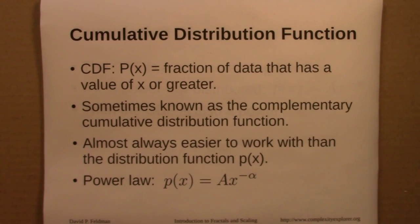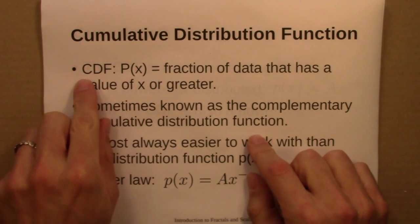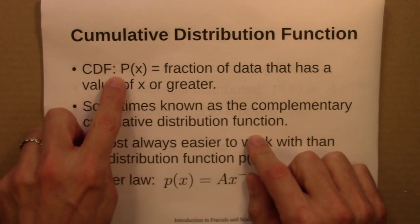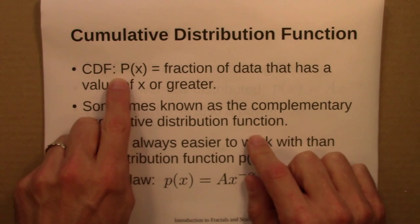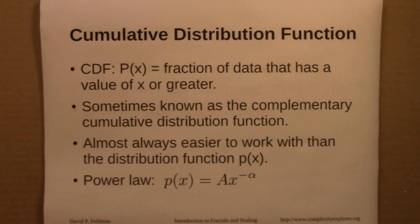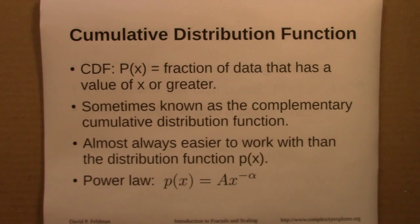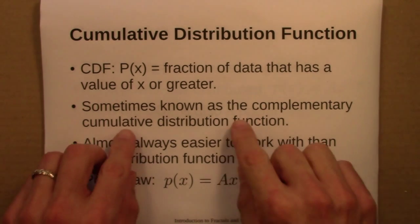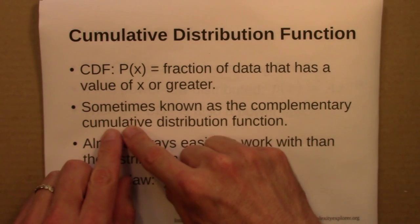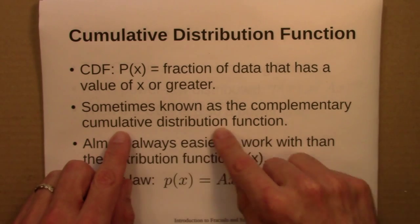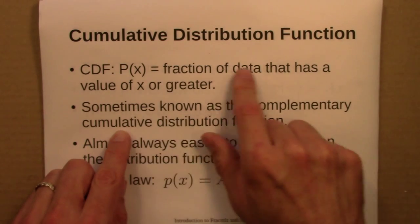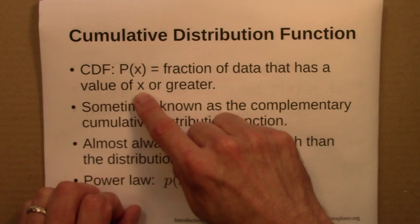We started by introducing the idea of a cumulative distribution function. The CDF, usually written as a capital P or capital F, is the fraction of data that has a value of x or greater. This is sometimes known as a complementary cumulative distribution function, since another common definition is the fraction of data with a value of x or less.